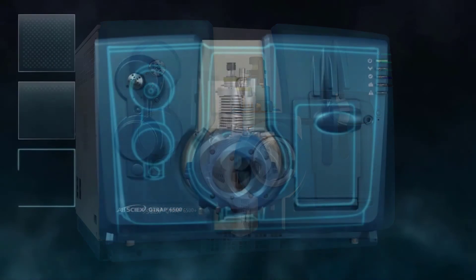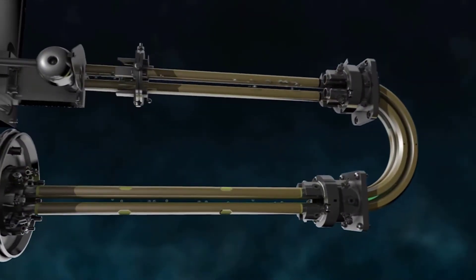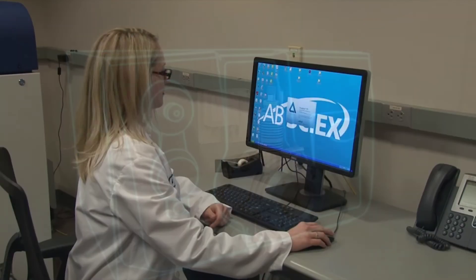A mass spectrometer is made of the following basic components: the ion source, mass analyzer, detector, and a computer workstation.